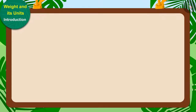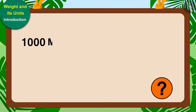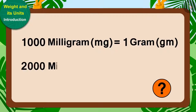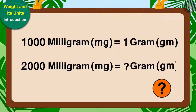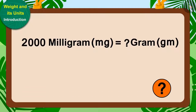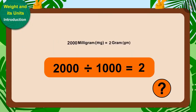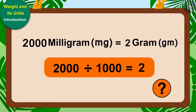Children, do you know that 1,000 milligrams is equal to 1 gram? So how many grams would 2,000 milligrams equal to? That's right — 2,000 divided by 1,000 equals 2 grams.